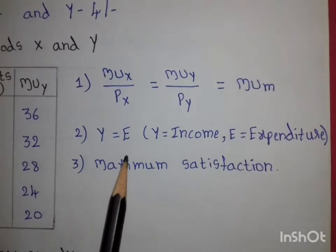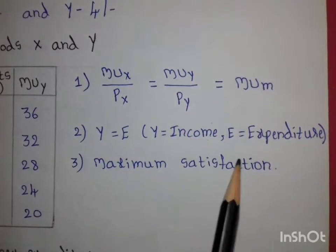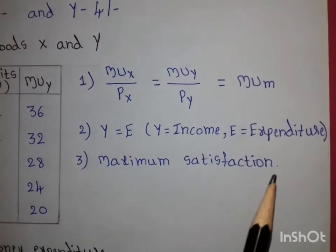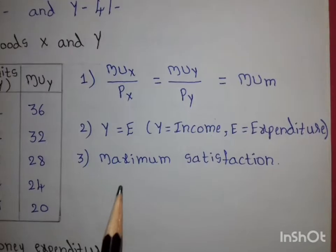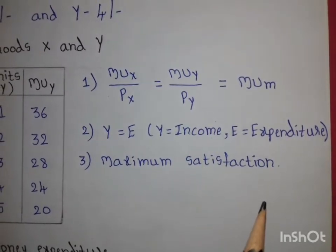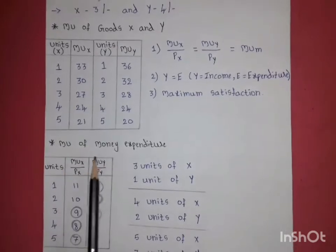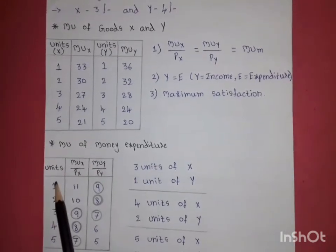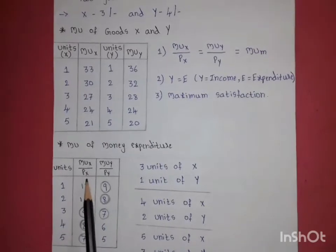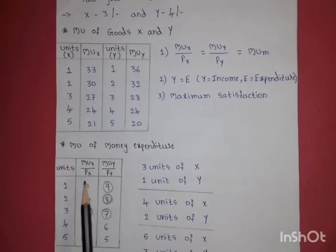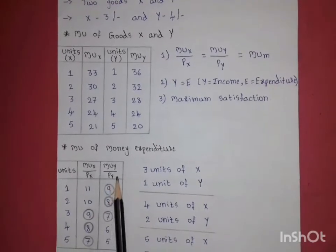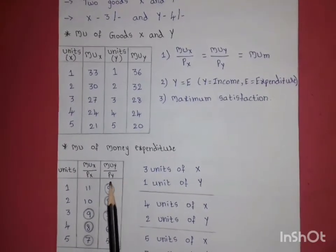Second condition: Y = E, meaning the consumer's income must equal expenditure. Third condition: maximum satisfaction — MUx/Px gives the marginal utility of money for good X, and MUy/Py gives the marginal utility of money for good Y.